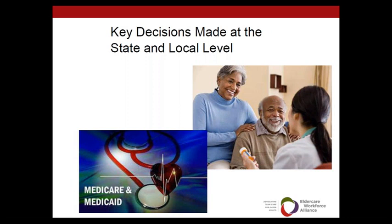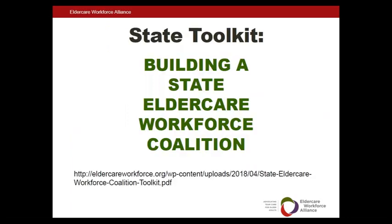Because so many decisions are made at the local level, EWA determined that it was important to do some outreach at the state level and began to look for ways to develop our state work. Because our coalition is so successful at the federal level, we saw an opportunity to help local partners develop similar coalitions. With the leadership of Amanda Borer, EWA developed a coalition in North Carolina and a toolkit to establish other coalitions.